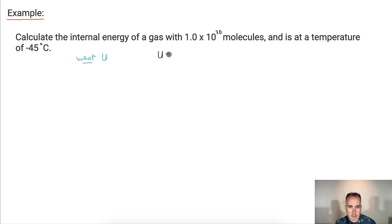So U equals three halves times n times RT, and we also have equals three halves times capital N times kb times T. Let's try to figure out which of these should we use.